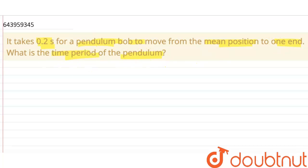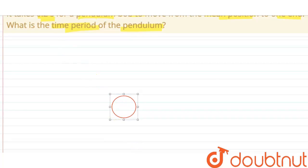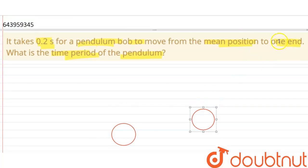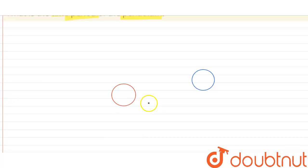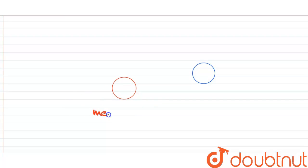So let's say this is our pendulum bob. Its mean position is here, and this is the end position—one end of the pendulum.